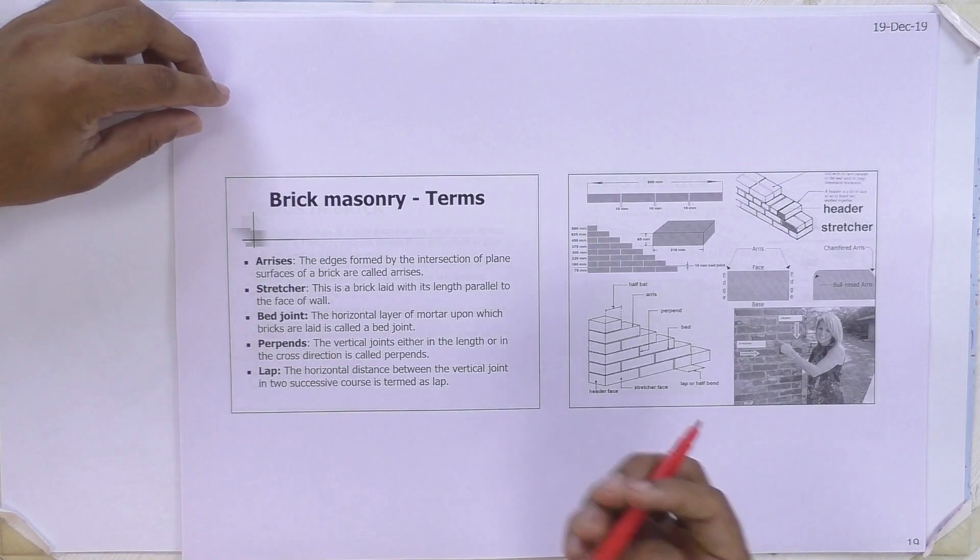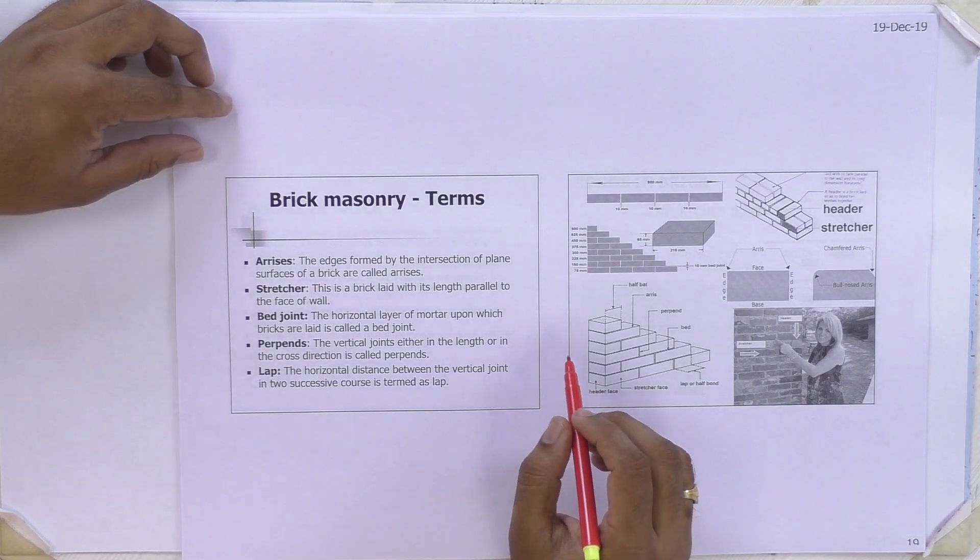Welcome to the second module, second video lecture on basics of civil and mechanical engineering. In the first lecture of the second module, we have seen different components of building and different types of foundations. In this video lecture, we are going to see brick masonry and stone masonry. First one is brick masonry.